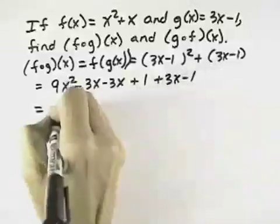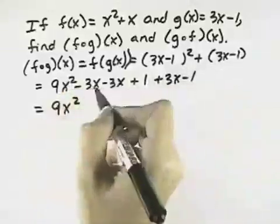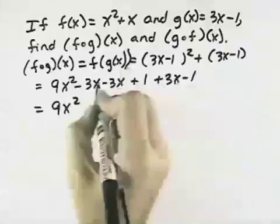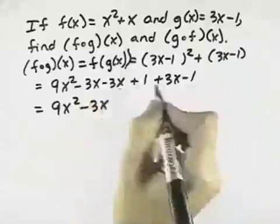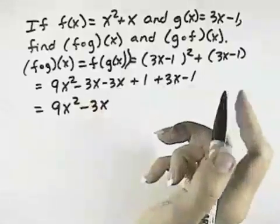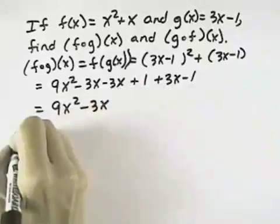And then we want to combine like terms, so we have 9x squared minus 3 minus 3 and plus 3 for all of our x terms gives us minus 3x, plus 1 minus 1 cancels those out. So we just have 9x squared minus 3x.